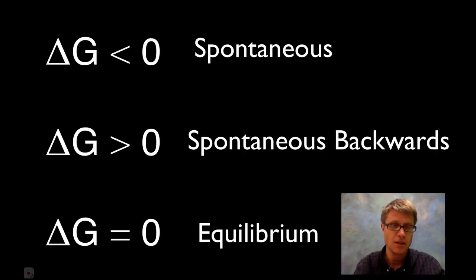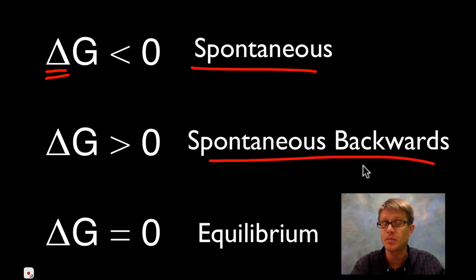Here's the summary: if we ever have delta G, or change in free energy, less than zero, that's a spontaneous reaction. If delta G is ever positive, that's going to be spontaneous in the opposite direction, non-spontaneous. We refer to this as an exergonic reaction and this as an endergonic reaction. If delta G is zero, we're at equilibrium.